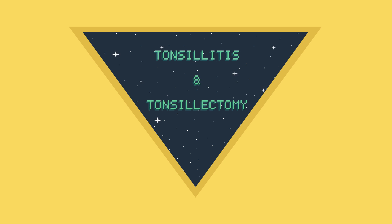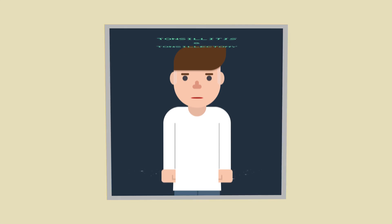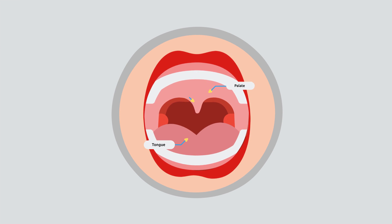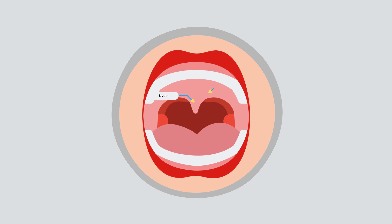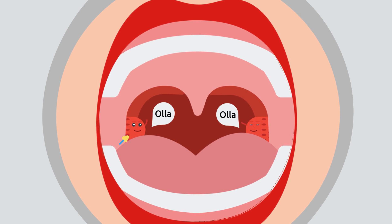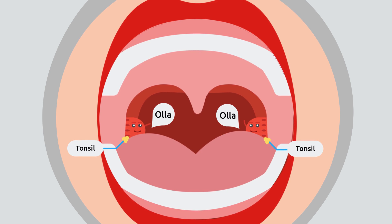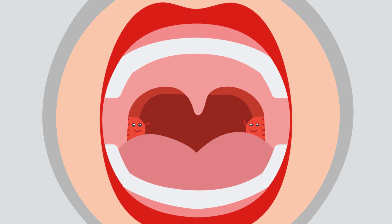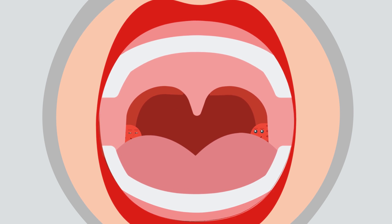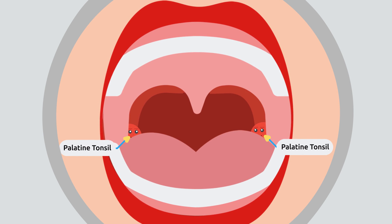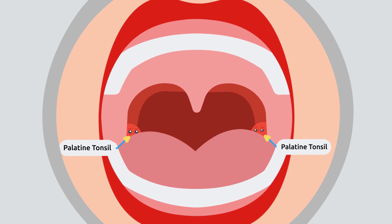Tonsillitis and Tonsillectomy. When a person opens his mouth, there are a lot of things you can see. One of the most important organs that help fight off infection are among them, also known as tonsils. Tonsils are often overlooked when you open your mouth because they are often small and hidden between the two arches. These tonsils are known as palatine tonsils due to their location near the palate, or the roof of the mouth.